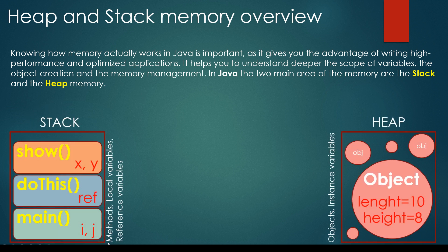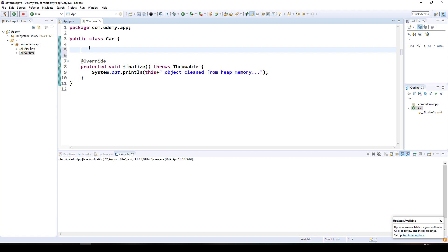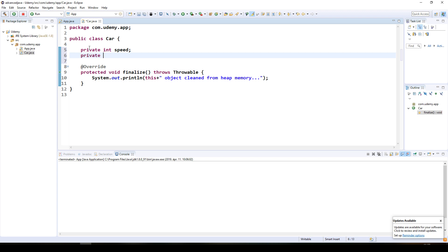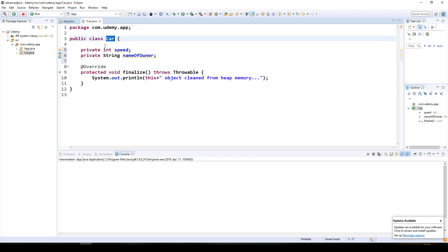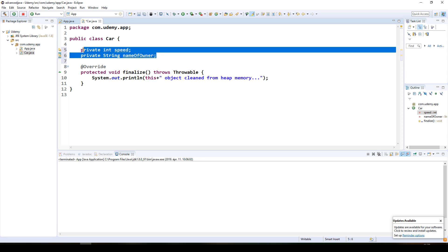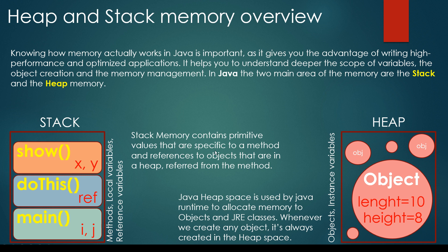Stack memory contains method calls, local variables and reference variables. Heap memory contains objects and instance variables. For example, when we have a car class we can define a private integer speed and a private string name of owner. These variables that belong to the class itself are called instance variables and they are stored on the heap memory, because they are associated with the object itself. Stack memory also contains primitive values specific to a method and references to objects in the heap. The Java heap space is used by the Java runtime to allocate memory to objects and JRE-related classes. Whenever we create any object it is always created in the heap space.